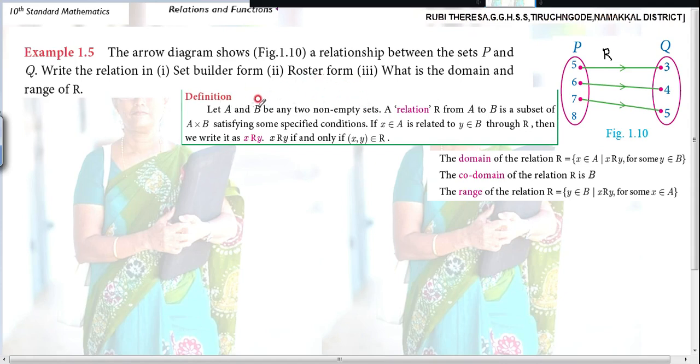Let A and B be any two non-empty sets, here P and Q. A relation R from A to B is a subset of A cross B. This is very important - not only subset, but satisfying some specified conditions. They have said it is the relation between P and Q, so these two are non-empty sets.